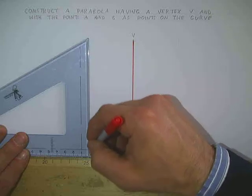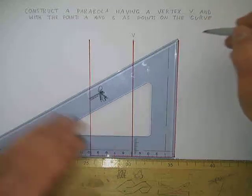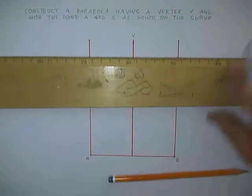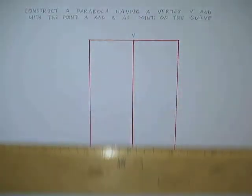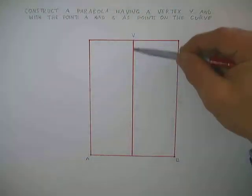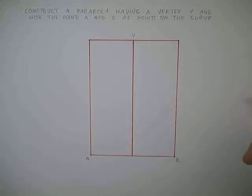I will construct two rectangles, each of them identical in size. With the line through v, the axis of the parabola.